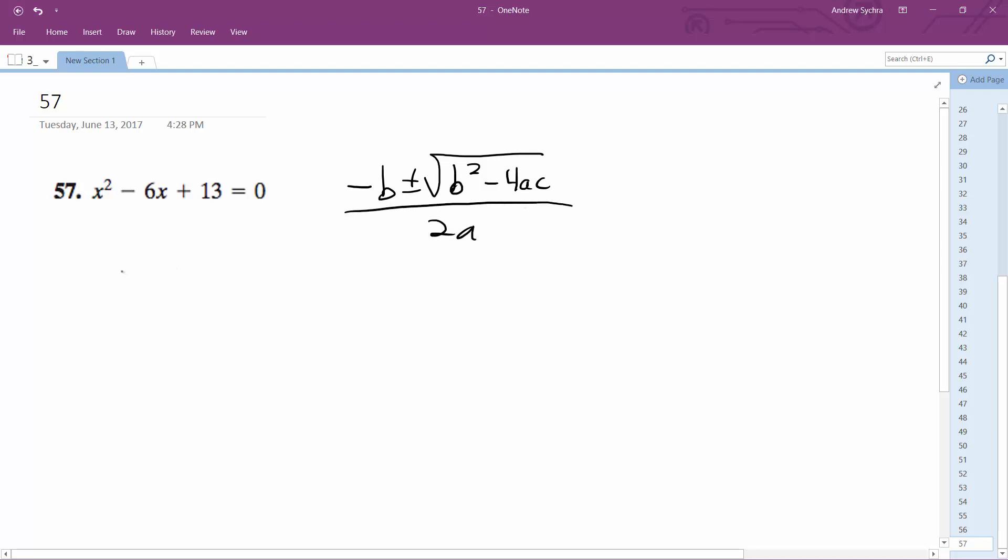So we're going to have the opposite of negative 6. Well, a is equal to 1, b is equal to negative 6, c is equal to 13.